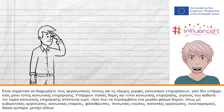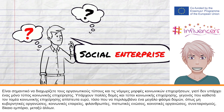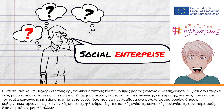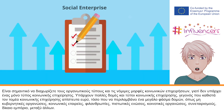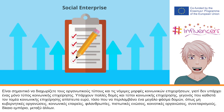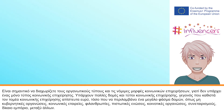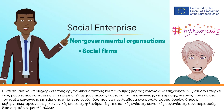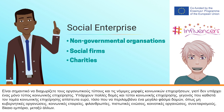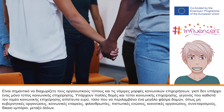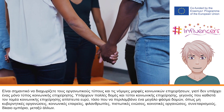It is important to distinguish organisational types and the legal forms of social enterprises because there is not one single type of social enterprise. There are a range of social enterprise structures and types which make the social enterprise sector incredibly diverse, encompassing a wide range of structures such as non-governmental organisations, social firms, charities, credit unions, community-based organisations, cooperative fair trades, amongst others.